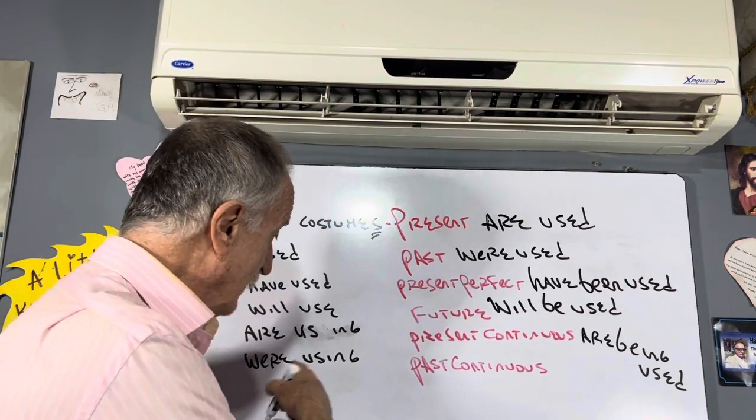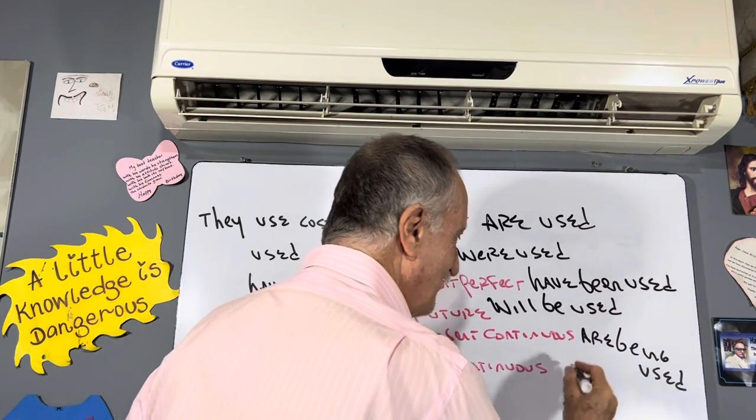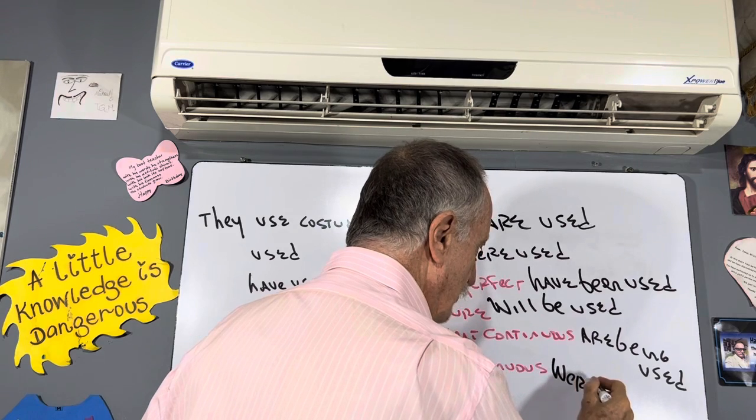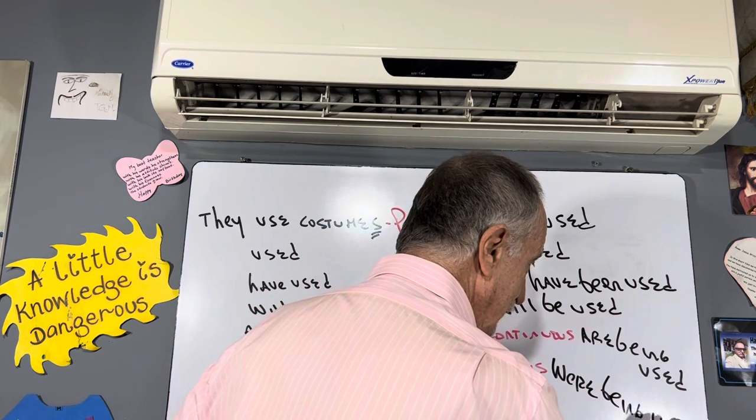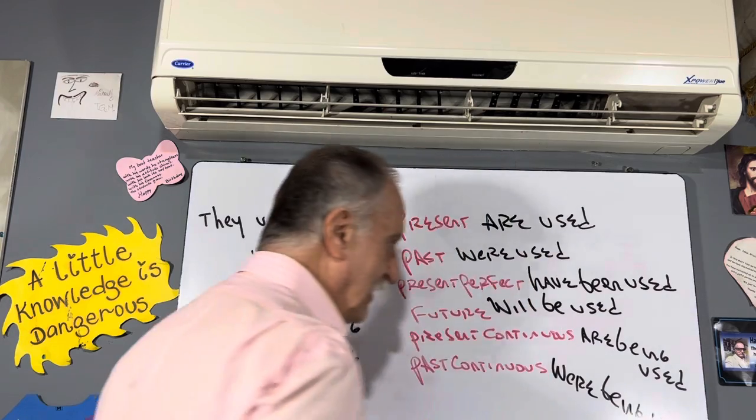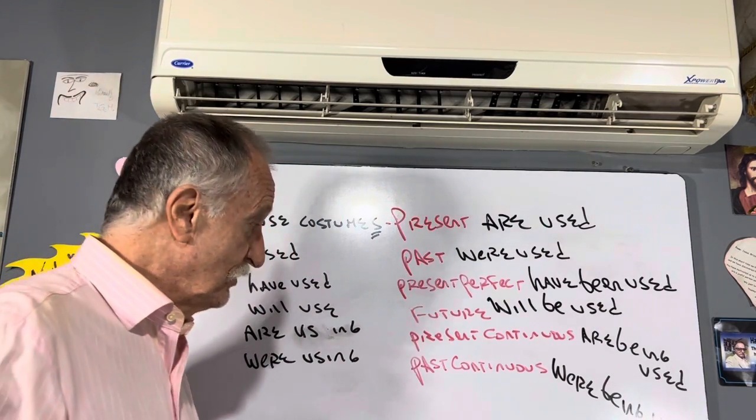Past continuous, mira. The same thing. Verb to be, continuous verb, ed. Were being used. You see?